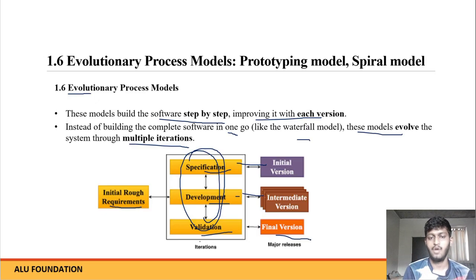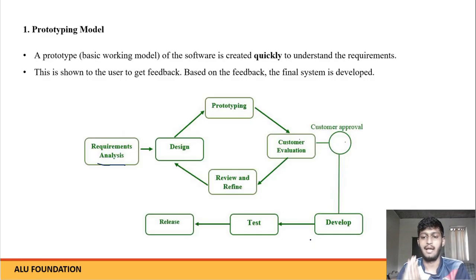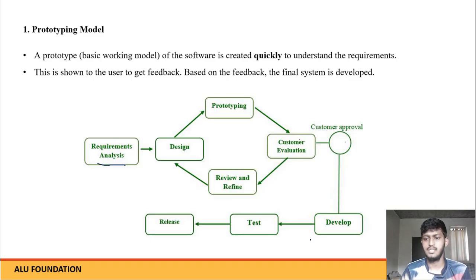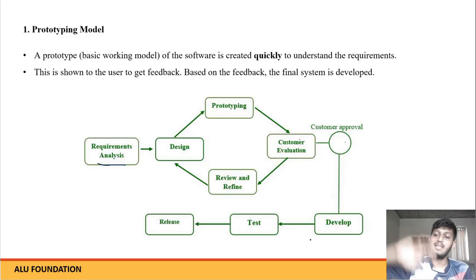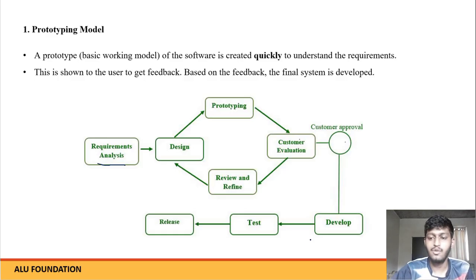What is a prototype? Our aim is to make a final version — a quality, working software. A prototype is a small version we create before making the final version. We create this small version, show it to the client, and ask for feedback. If the client approves, we start making the final version; if not, we create a new improved prototype.